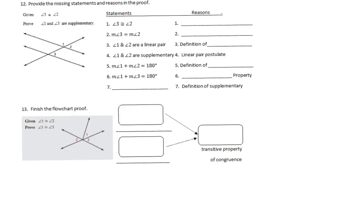Number 12: provide the missing statements and reasons. You'll have a word bank on your test. The first reason is 'given' — that's almost always the case. Going from a congruent symbol to an equal sign is the definition of congruence. Then: angles 1 and 2 are a linear pair — that's the definition of a linear pair.